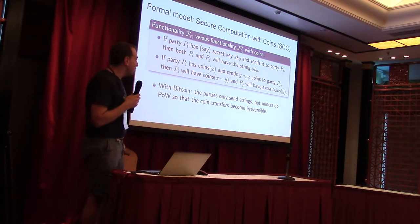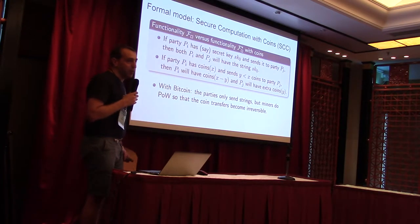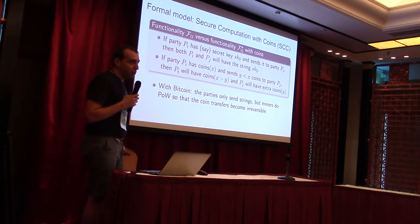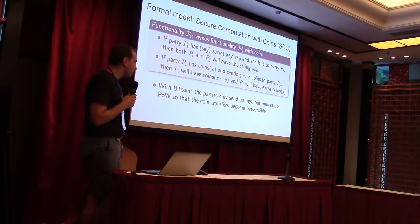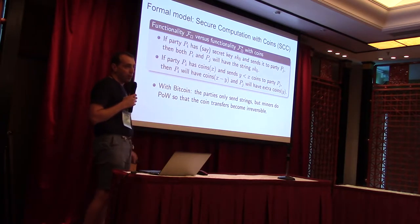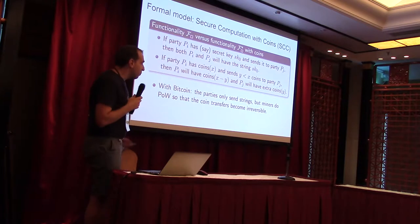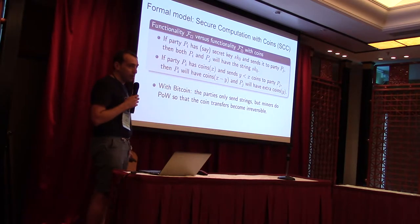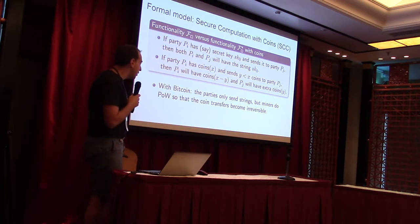When parties communicate over the internet, if we are implementing coins using a cryptocurrency like Bitcoin, parties only send data over the internet — they don't actually send coins. Alice will send signed transactions that are put into a global ledger, and this consensus on the global ledger becomes irreversible in Bitcoin with proof of work. This is how you transfer coins over the internet with Bitcoin.